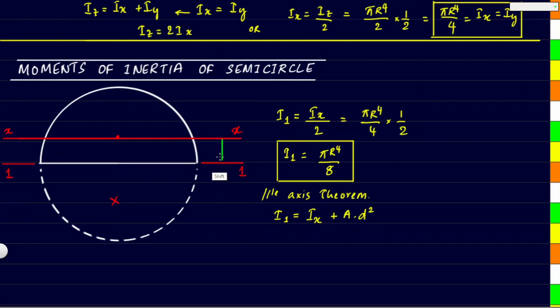Let us say the distance between these two, the x axis and 11 axis, is d and that will be same as the value y̅ that we had calculated while dealing with the centroid. We know that the centroid distance in case of semicircle will be equal to 4r/3π and the same will be equal to the distance d. Also here the area of semicircle will be half of the area of the complete circle, so the area of this semicircle will be πr²/2.